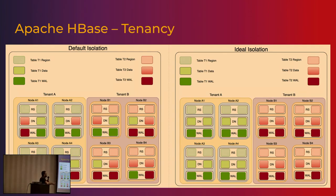Tenancy in a data store typically means that when you have two use cases, both of them should have some amount of isolation so you can guarantee certain workload requirements — maybe latency, maybe throughput, or something else. So you need a certain amount of isolation between tenants to guarantee those requirements.